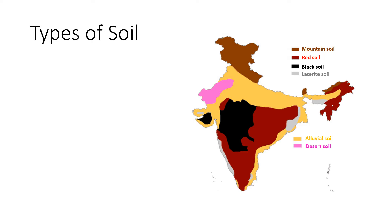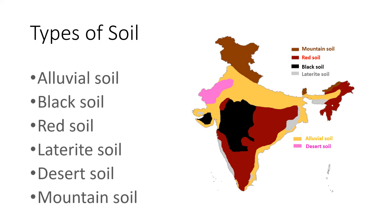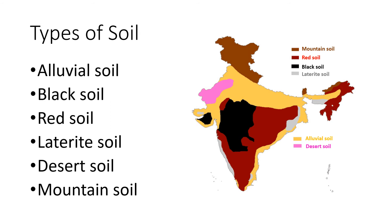There are 6 main types of soil found in India. These different types of soil are suitable for growing different types of crops. They are alluvial soil, black soil, red soil, laterite soil, desert soil and mountain soil. Let's know about each one of them in detail.